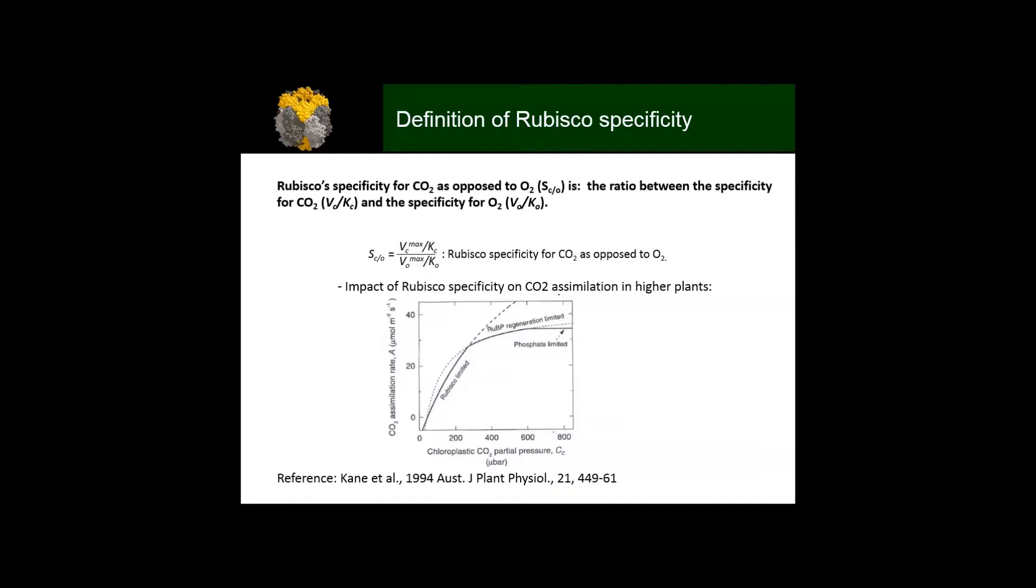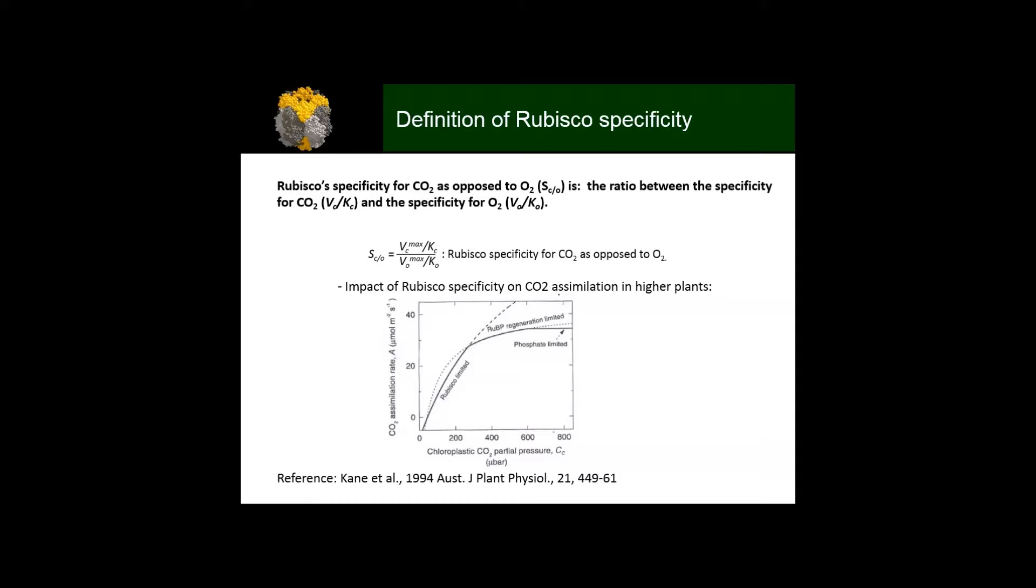This slide shows there is substantial diversity of Rubisco specificity amongst higher plants, looking at C3 plants and different biochemical subtypes of C4 grasses as well as intermediates. If we plot it versus its catalytic speed, we see substantial variability and also a minimal trade-off between the catalytic speed and the specificity. The more specific you are for CO2, it seems there's a decrease in the catalytic speed, mainly for Form 1 marine Rubiscos.